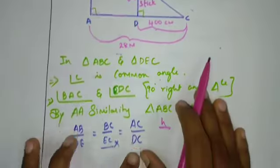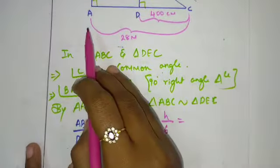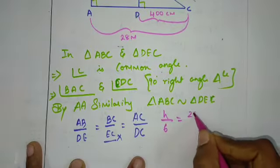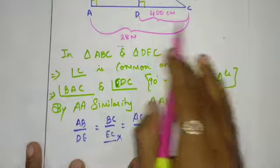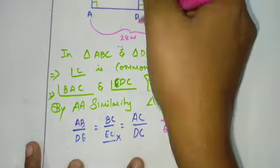Now AB is the height of the tower, which we call H. So H divided by DE, and DE is the height of the stick which is 6 meters, equals AC. AC is the total shadow cast by the tower, which is 28 meters. DC is the shadow cast by the stick.